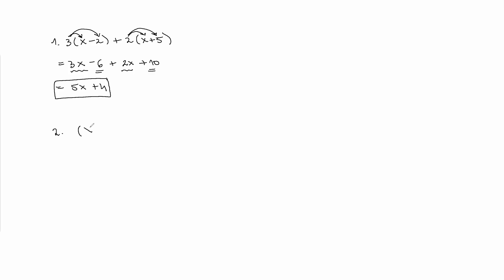Question number two: expand and simplify (x + 3)(x - 4). We would also have to use the distributive property. We need to multiply x from the first parentheses by each term in the second parentheses, and then do the same for positive 3. Multiplying x by x gives us x squared, and multiplying x by negative 4 gives us negative 4x. 3 multiplied by x gives us positive 3x, and 3 multiplied by negative 4 gives us negative 12.